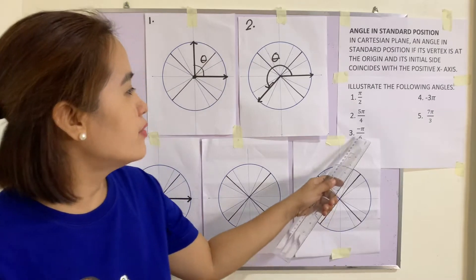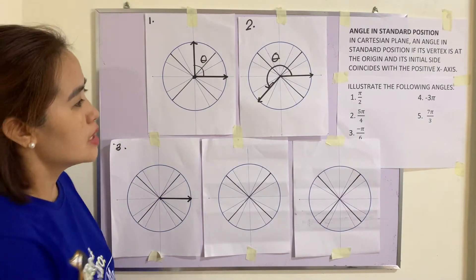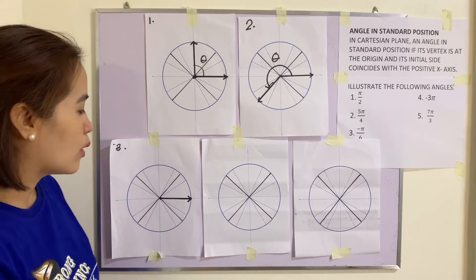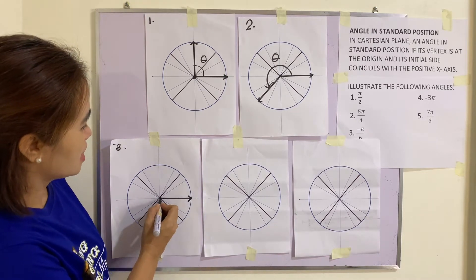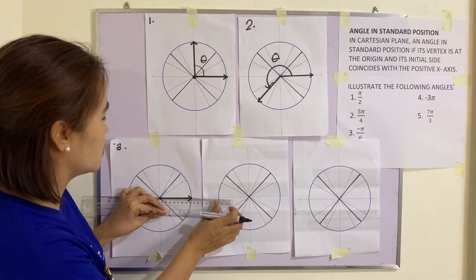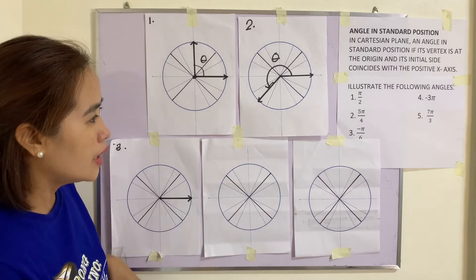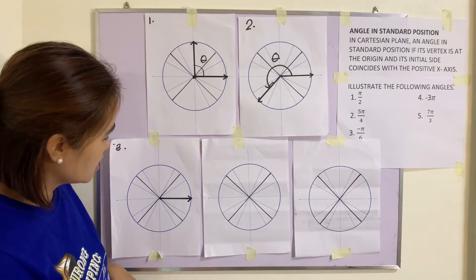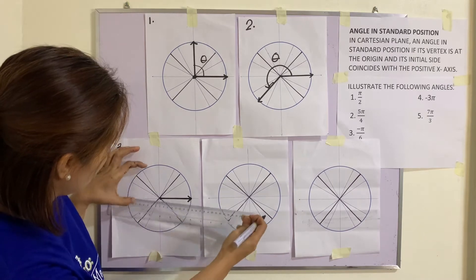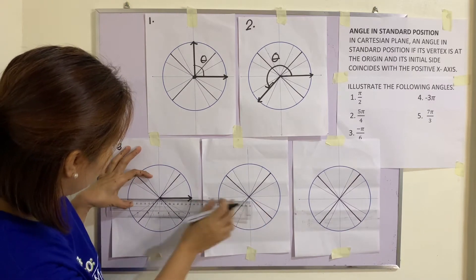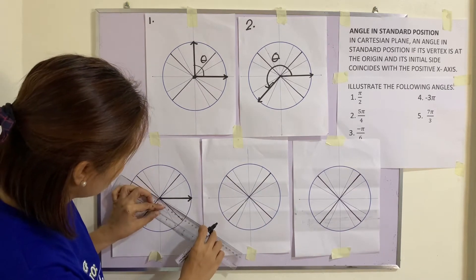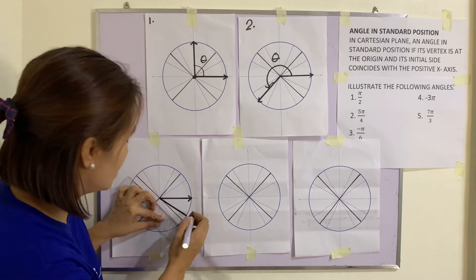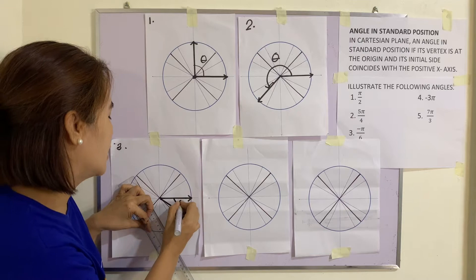Number three: we have -π/6. This time the rotation of the angle is clockwise. The initial side is the positive x-axis, and the angle is -π/6.